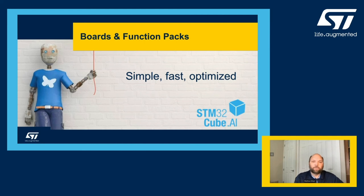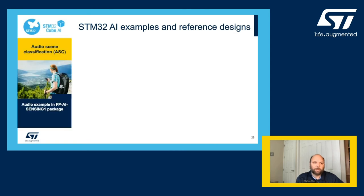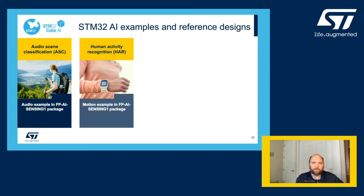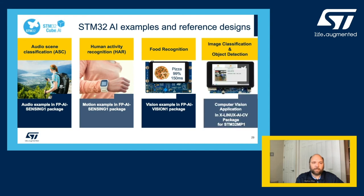Now I want to give you a brief overview of our function packs, which are the software examples and the supported ST development boards. The four main examples we are offering are audio scene classification and human activity recognition, both included in the FP AI Sensing 1 package. Food recognition is part of the FP AI Vision 1 package, and the X-Linux AI CV package supports image and object classification on the STM32 MP1 MPU.